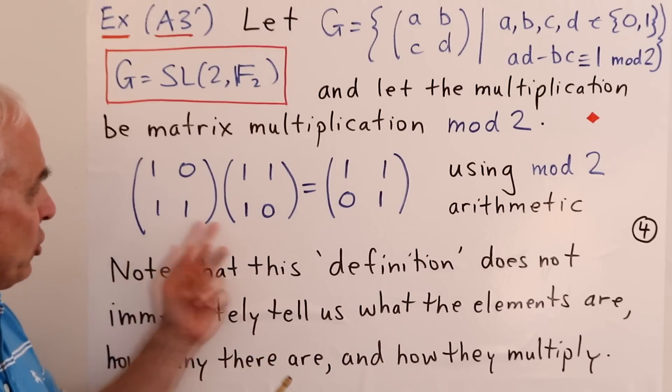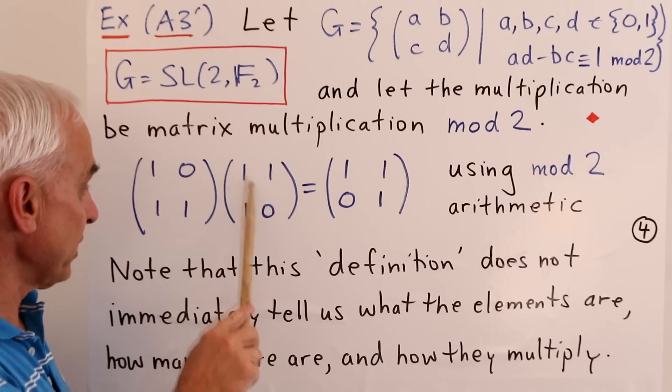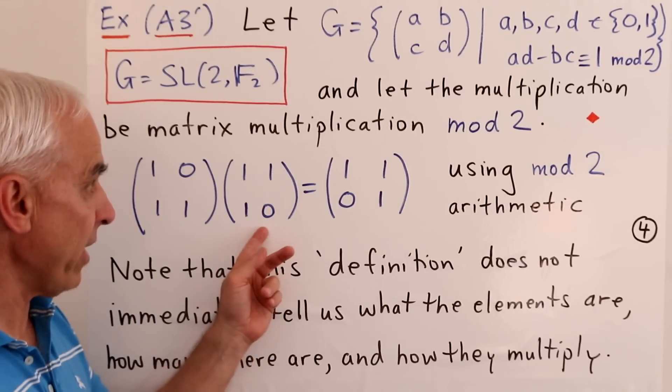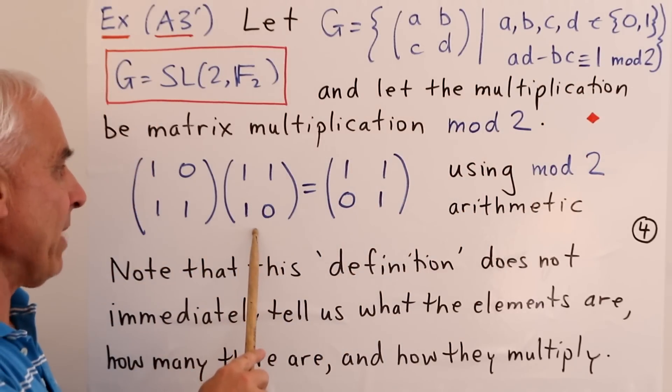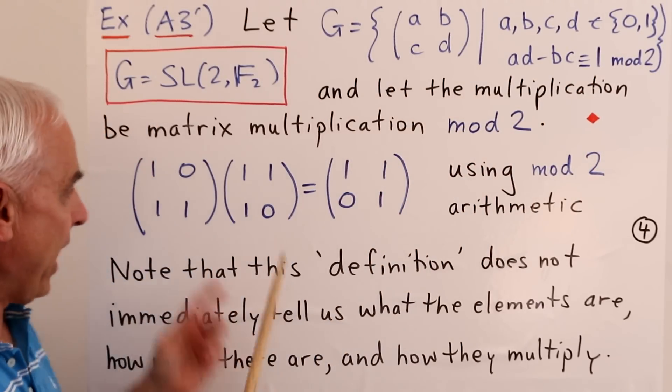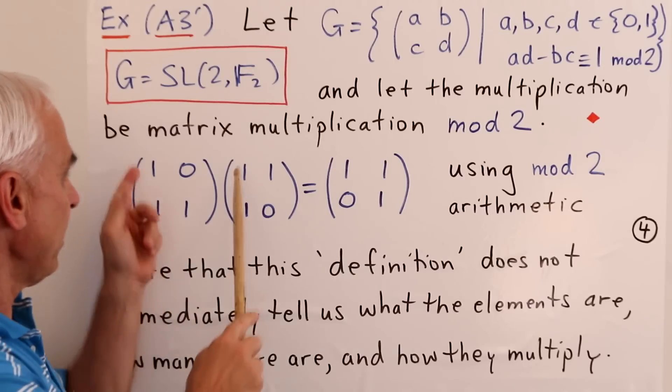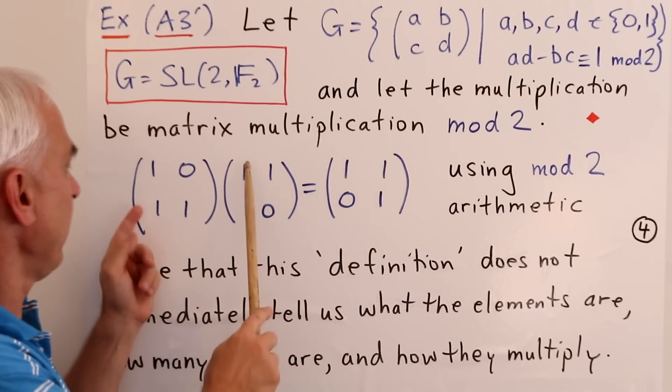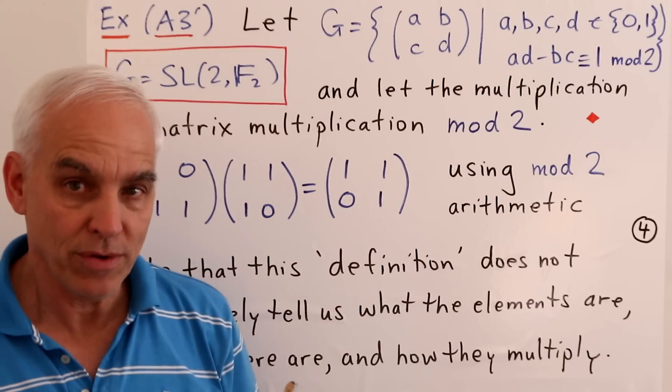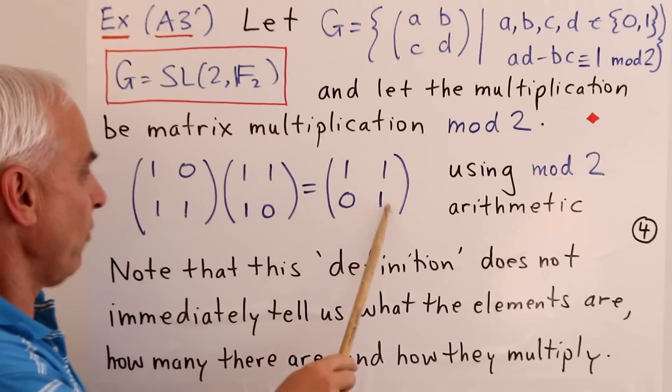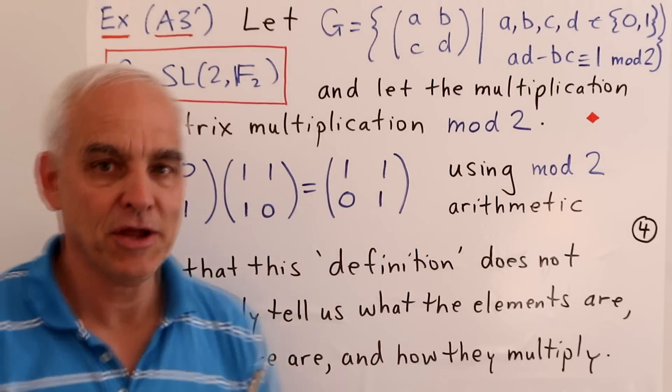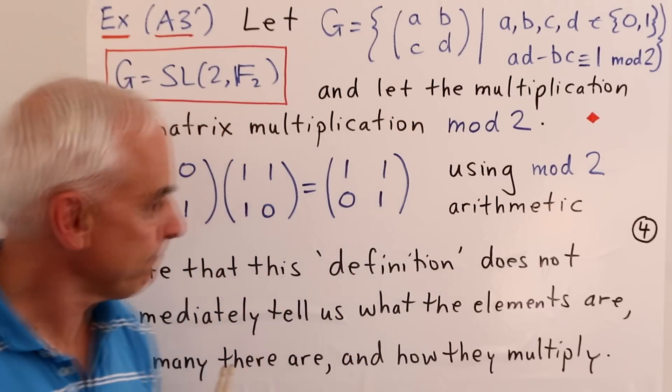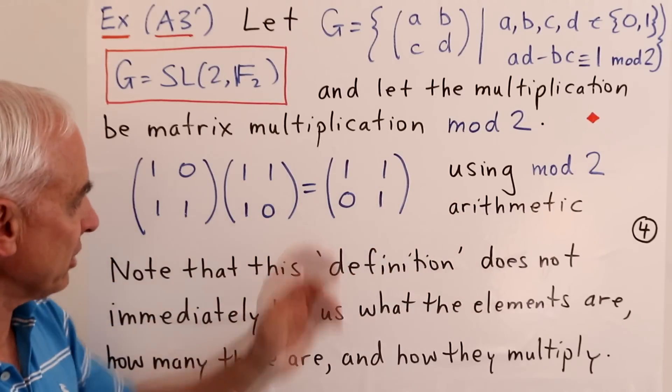So for example, here are two matrices. This one has determinant one minus zero, that's one. This one has determinant zero minus one, that's minus one. But minus one is the same as one mod two. So this also is a matrix that belongs to this set. And the product is one, one, one plus one is two, which is the same as zero. And one plus zero is one. And so that's also an entry of this set. So we're using mod two arithmetic when we do the multiplication.